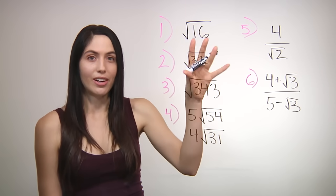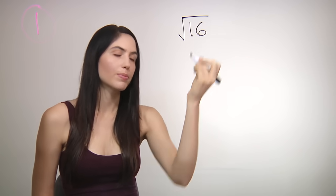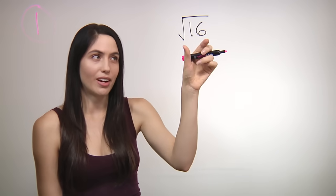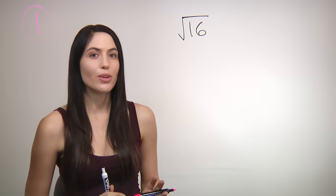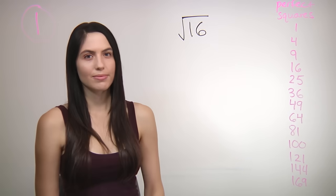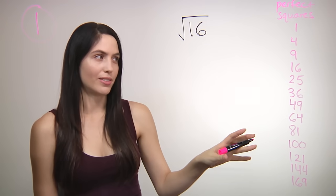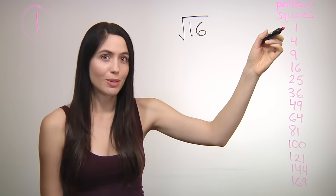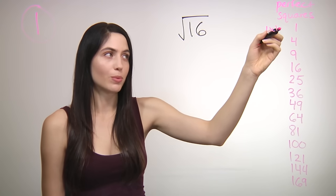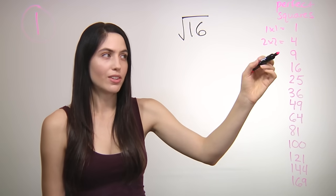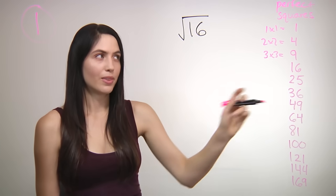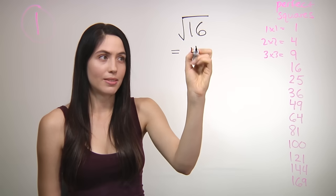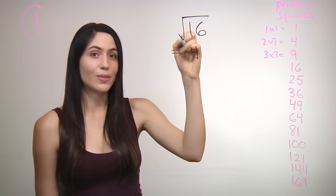Let's start with the simplest type, which is if the number underneath the root is a perfect square. You're going to need to know perfect square numbers, so let me show you the first 13 perfect squares. What are perfect squares? It just means that each of these numbers has a number that, when multiplied by itself, gives you back this number. So for 1, that's 1 times 1 equals 1. For 4, it's 2 times 2. For 9, it's 3 times 3 equals 9, and so on. So if the number under your square root is just a perfect square, you can simplify it immediately. You look for the number that, when multiplied by itself, gives you 16, and that's 4.